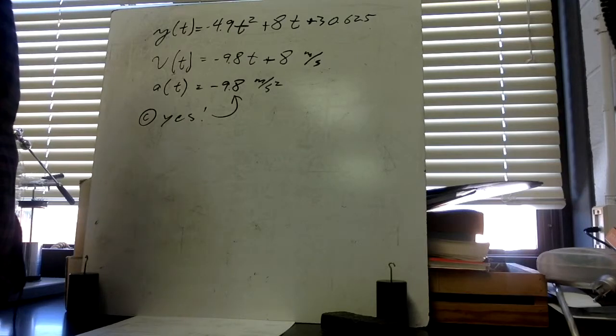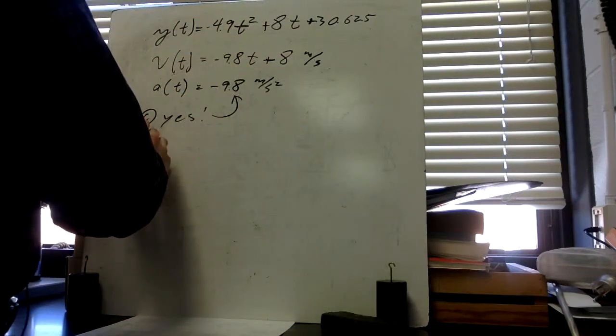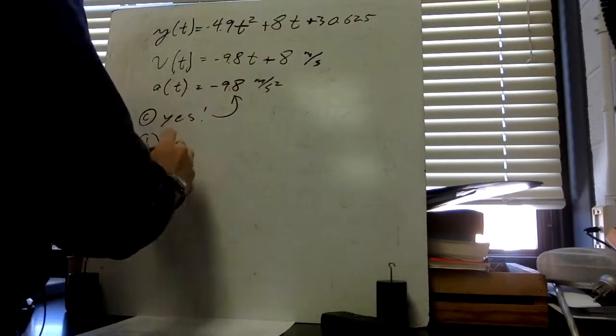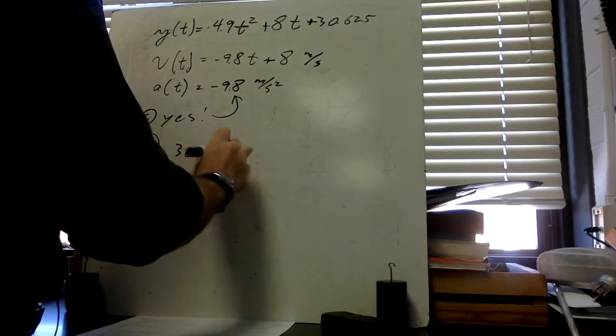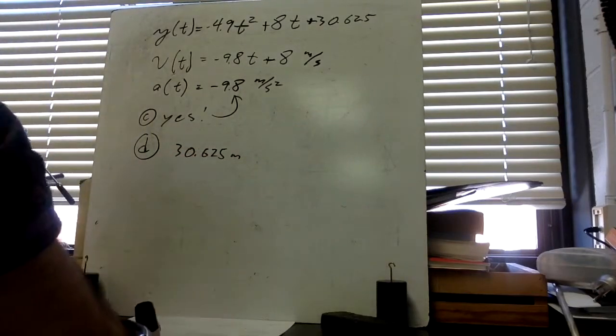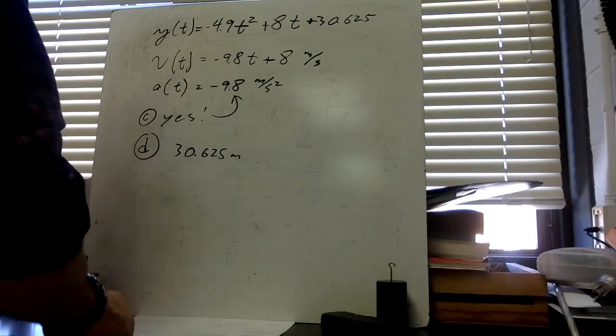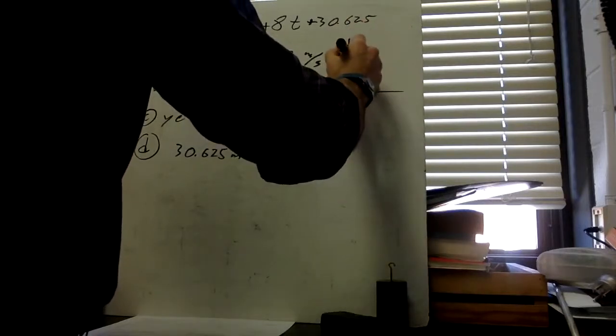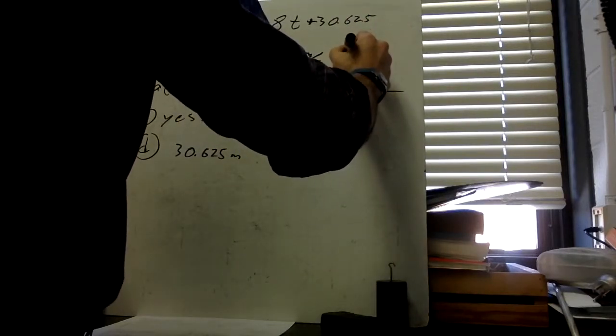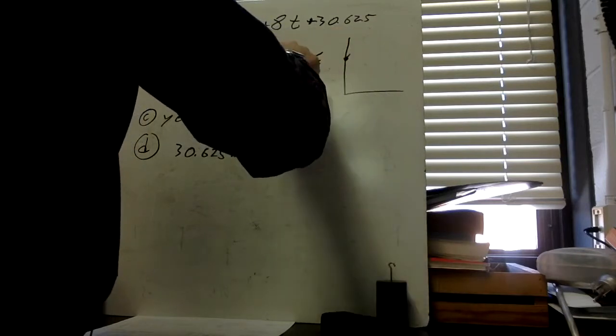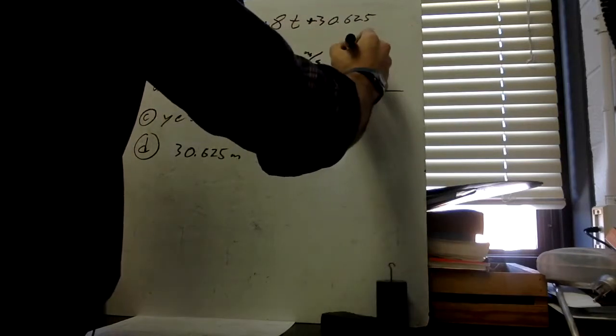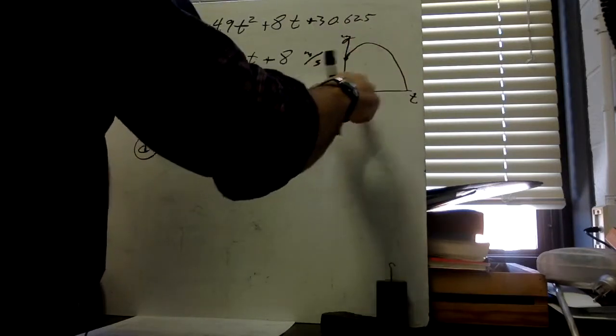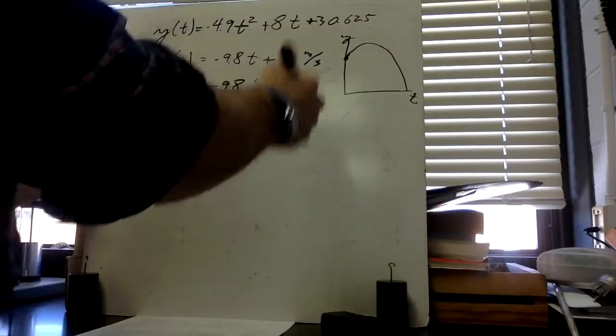So where is the particle at t = 0? Well, we plug 0 in for this. We plug 0 in for t, that goes away, that goes away. It's at 30.625 meters. So it's starting at a certain height. Let's draw the graph of this just so we can see. Here's the position graph. It's starting off here at 30.625 meters, and it's given an initial upward velocity. So it's going to look like this. Here's y and t, the vertical position with respect to time. We're talking about something that was thrown up into the air.